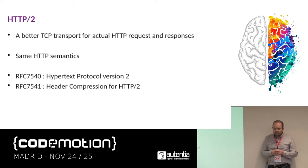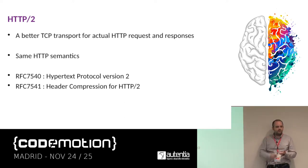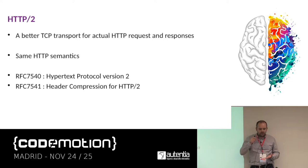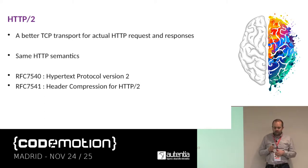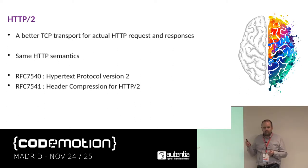The idea is not to change everything. We keep the same semantics — we still have GET requests, POST requests, headers, and resource paths. But we really want to focus on how data travels on the wire. There are two RFCs describing the protocol: the Hypertext Transfer Protocol version two, and the header compression mechanism.